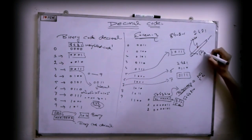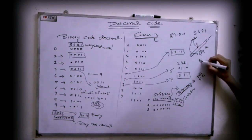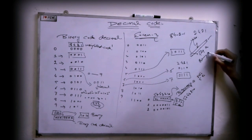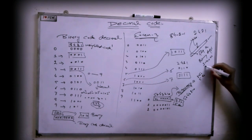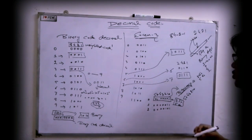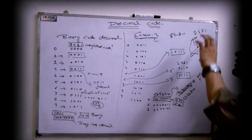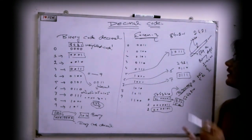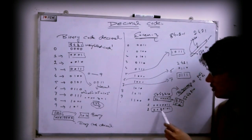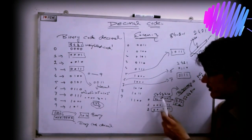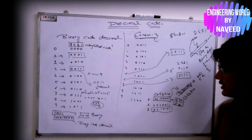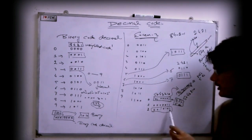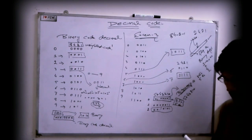A noisy signal may flip one or two binary digits of your data. Whenever a receiver receives your data and it does not contain exactly five zeros and two ones, the receiver acknowledges that there is some sort of error present. For example, if we transmit 2 and a noisy signal flips a digit, the receiver gets three ones and four zeros, and it acknowledges that noise is present in the data.